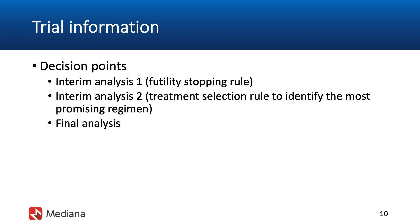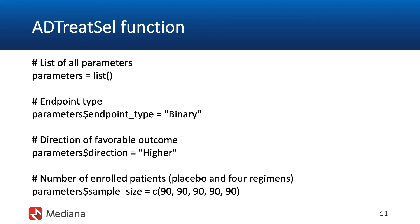The second interim analysis supports treatment selection among regimens retained at the first interim. The trial sponsor is interested in identifying the single best treatment regimen for the final assessment. The software is quite flexible and allows any predefined number of regimens or doses to be selected at the second interim. To control the type 1 error rate, a multiplicity correction is predefined — in this case, the Hochberg test.